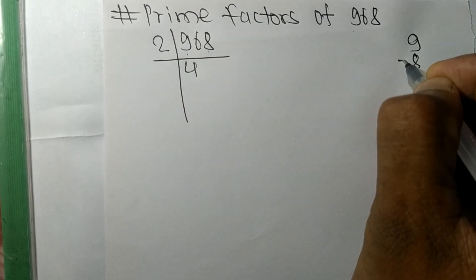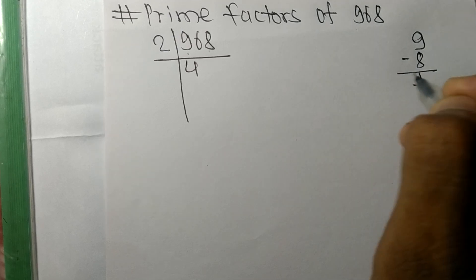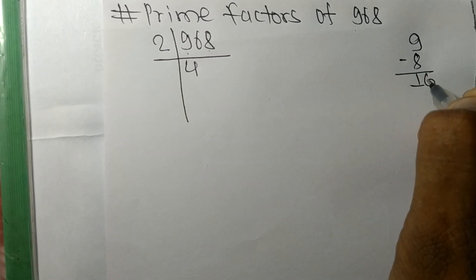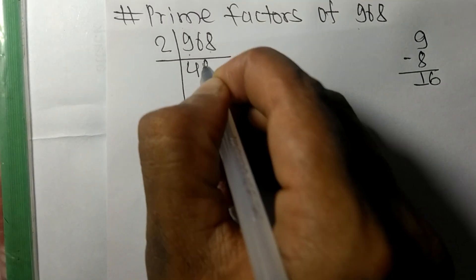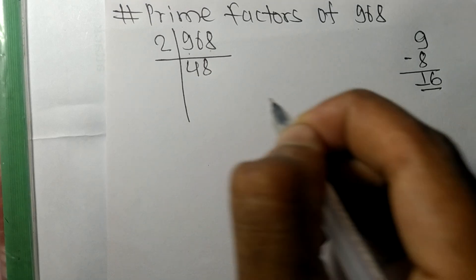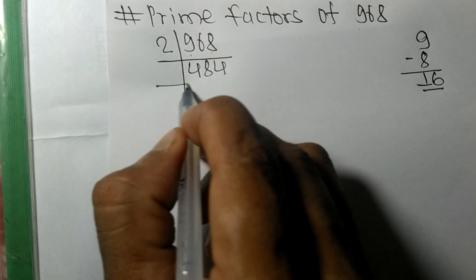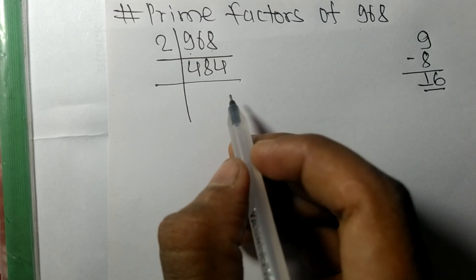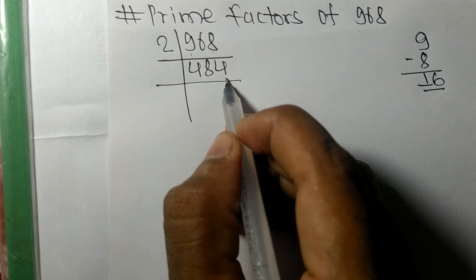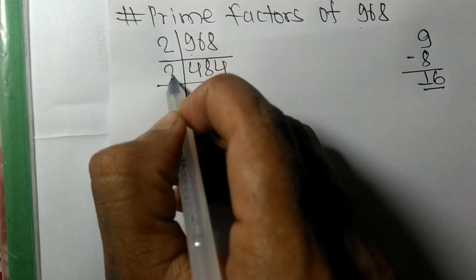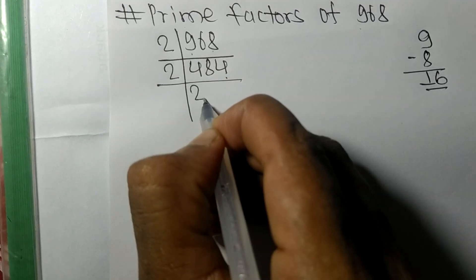2 times 4 mean 8. So now again it has even number 4 at last, so it is exactly divisible by 2. 2 times 2 mean 4, 2 times 4 mean 8, 2 times 2 mean 4.